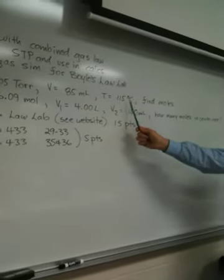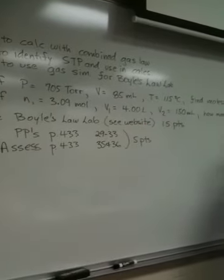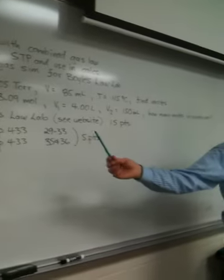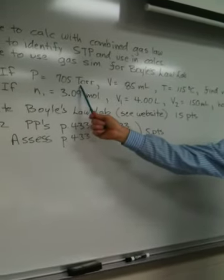So we've got to add what? 273. Okay, what do we have to do with this mils? Change it to liters. Change it to liters, yes. What do we do with torr? Change it to atmospheres. Change it to atmospheres. Okay, let's go back to the paper now.